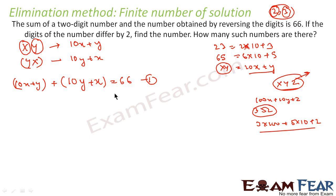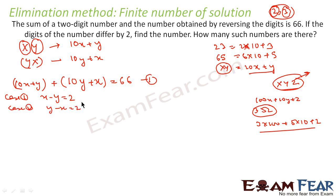Also, the digits differ by 2. Now, x can be greater than y, or y can be greater than x — there are two possibilities. Case 1: x minus y equals 2. Case 2: y minus x equals 2.